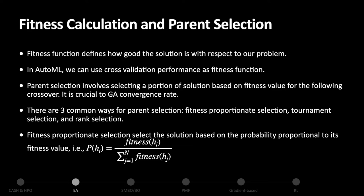The fitness function defines how good a solution is with respect to our problem. In AutoML, we can use cross-validation performance as a fitness function. Parent selection involves selecting a portion of solutions based on fitness values for the following crossover. It is crucial to the GA convergence rate. There are three common ways for parent selection: fitness proportionate selection, tournament selection, and rank selection.